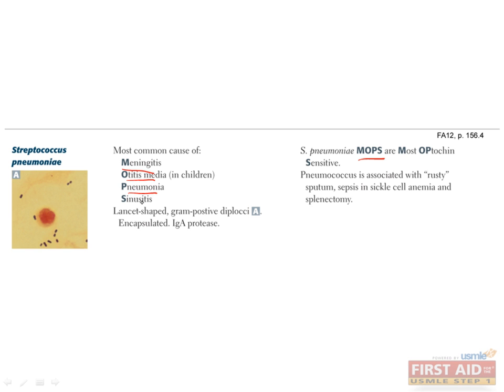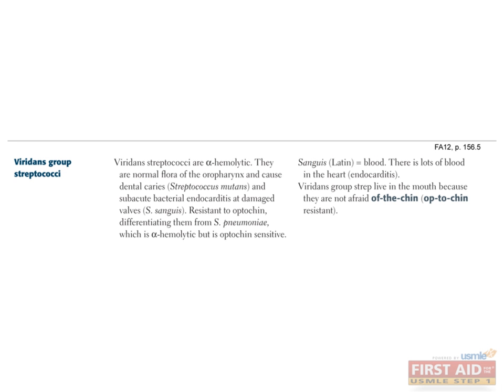Finally, S. pneumoniae is a common cause of sinusitis that can present with symptoms such as congestion, headache, green-yellow discharge, malaise, and general tightening sensation within the sinus cavities. Viridans strep is our alpha-hemolytic, gram-positive cocci that is optochin-resistant.